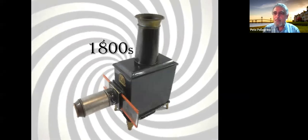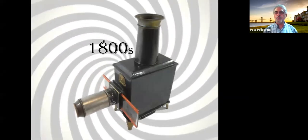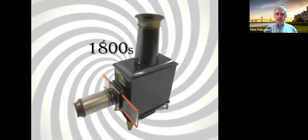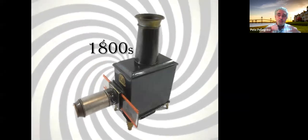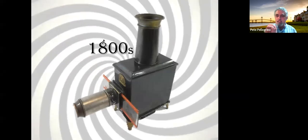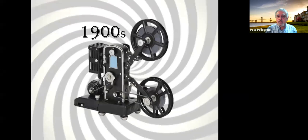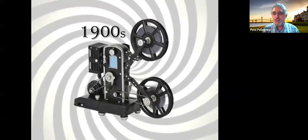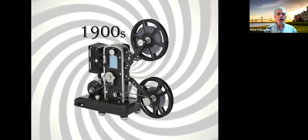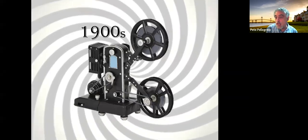It begins with something called the magic lantern in the 1800s — the forerunner to the film strip — where images painted on glass were slid past a light and projected onto a screen, often accompanied with music and story. Then we get to the 1900s and the silent film, moving pictures. It's the introduction of the motion picture, which dominates the early part of the 1900s, and then we go from silent films to talkies.